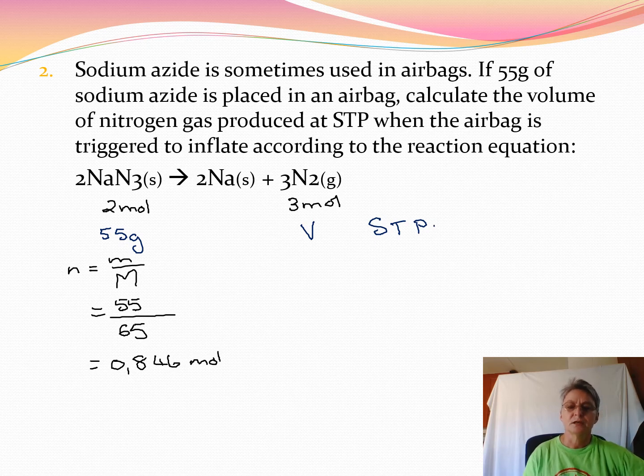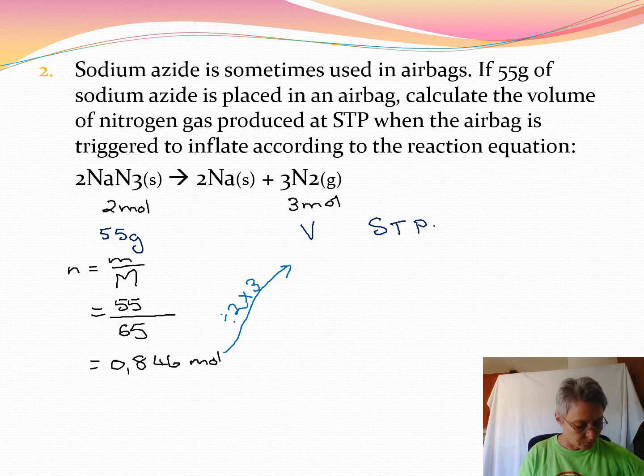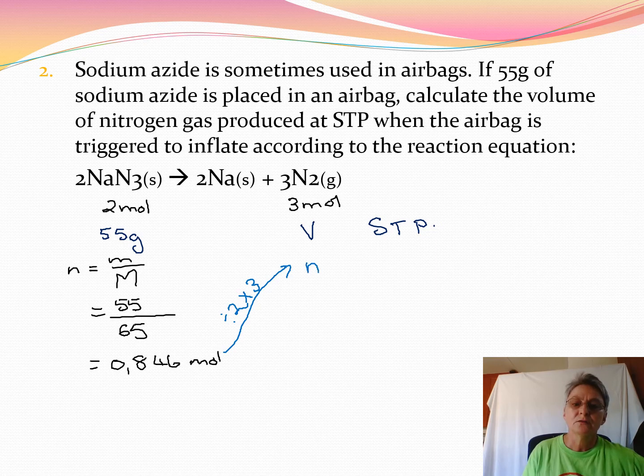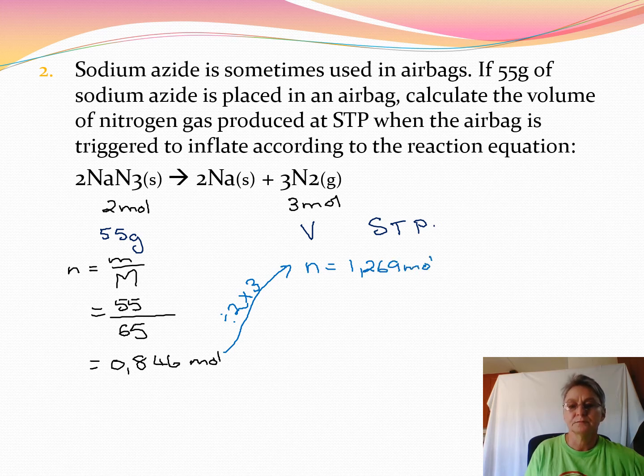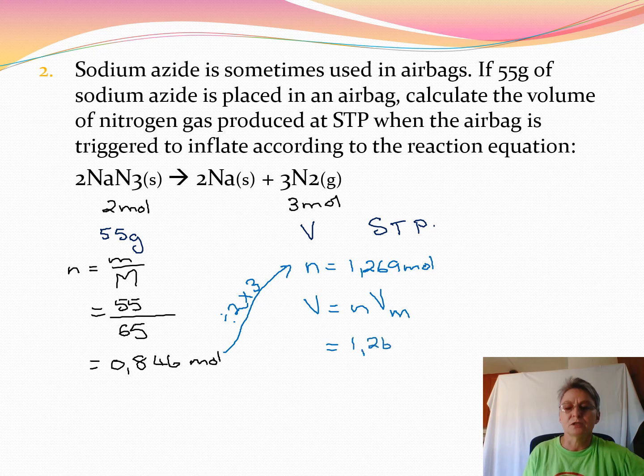To change that into the moles of nitrogen, we need to divide by 2 and multiply by 3, and we get the moles of nitrogen forming as 1.269 moles. Now this is at STP, so the volume will be the moles times the molar volume at STP. So it's 1.269 times 22.4, which is 28.43 cubic decimetres.